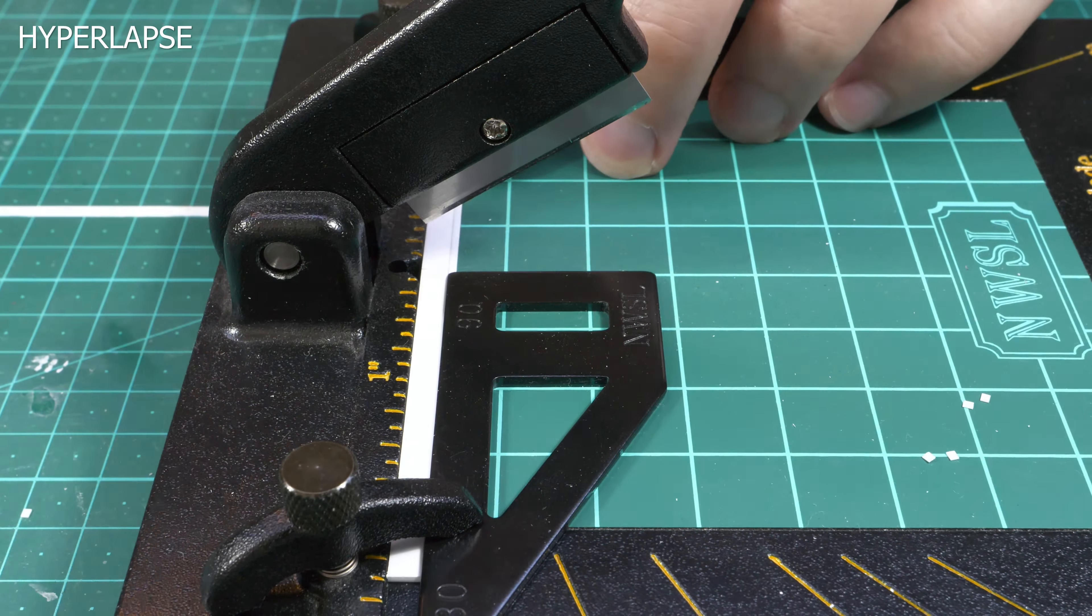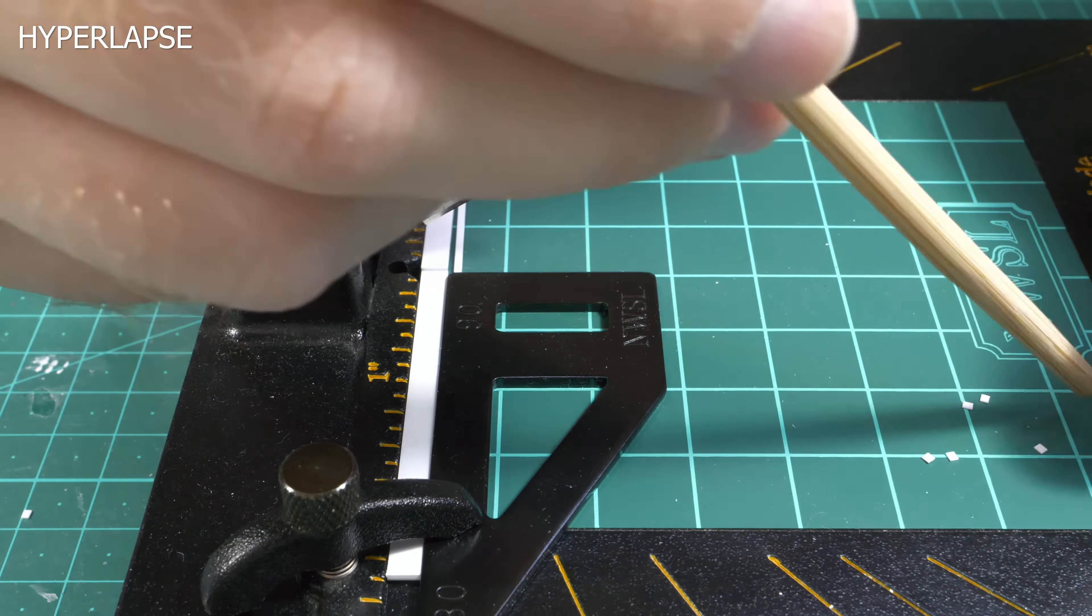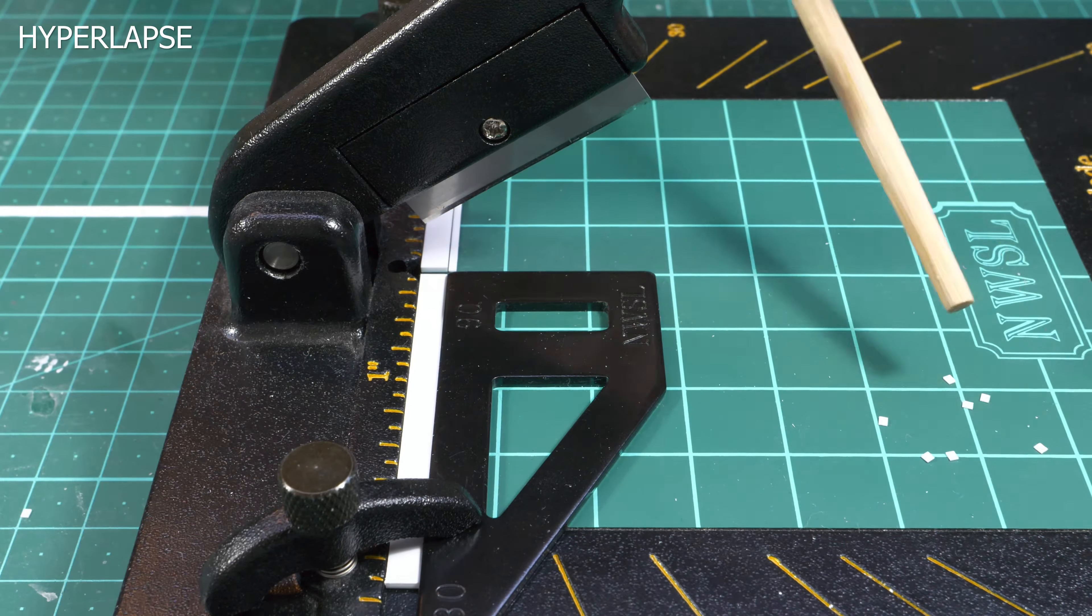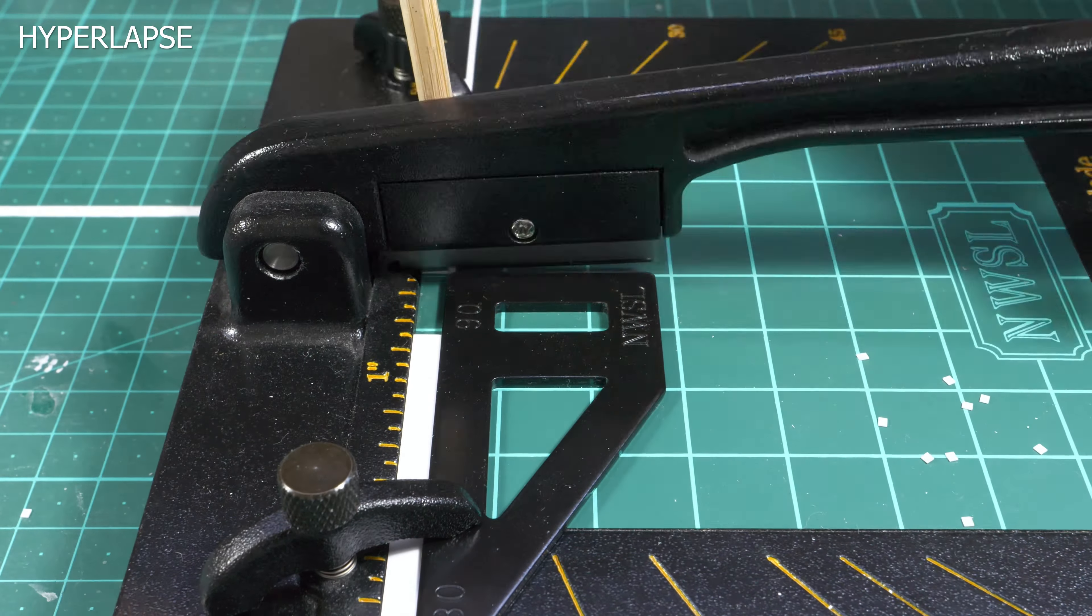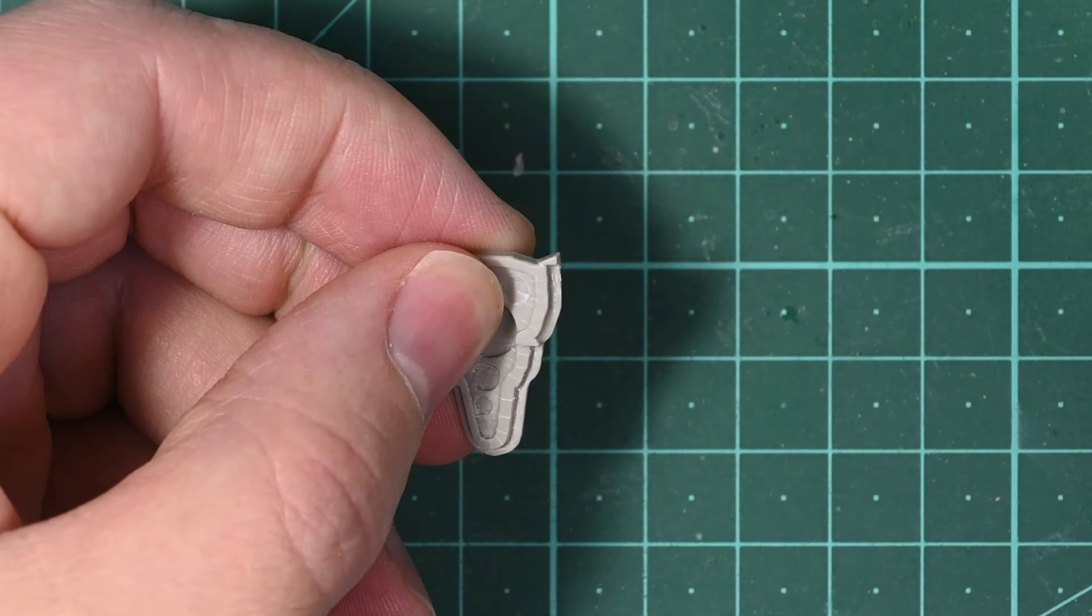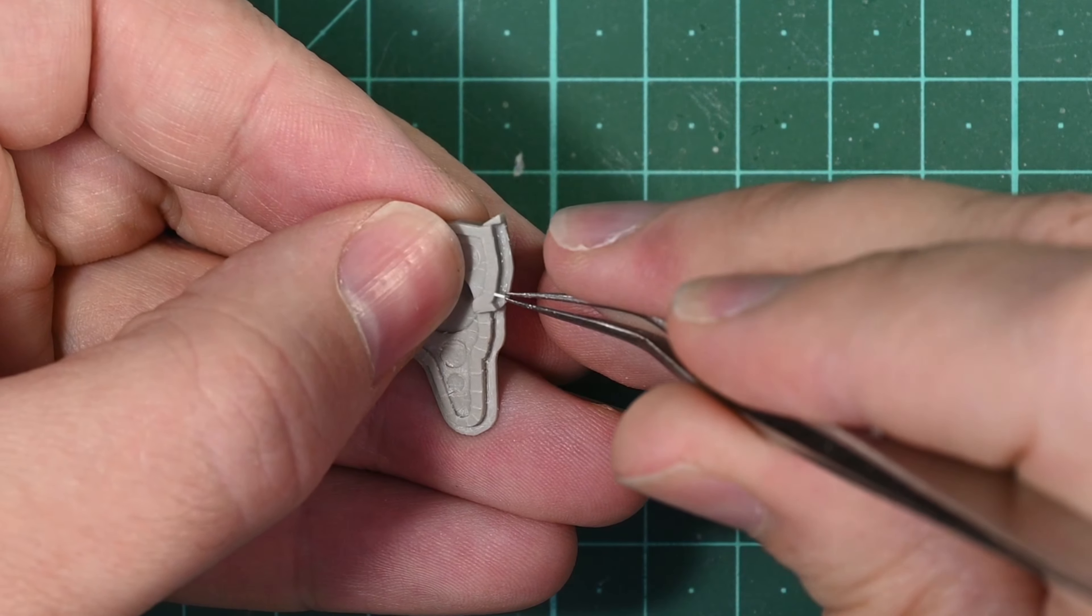Although it is not strictly necessary to do this with a chopper, it does help. In this case, I'm mostly using the chopper to ensure that I make 90 degree cuts. In total, I need around 20 of these pieces. Once I have cut out all the pieces, I then move on to installation.